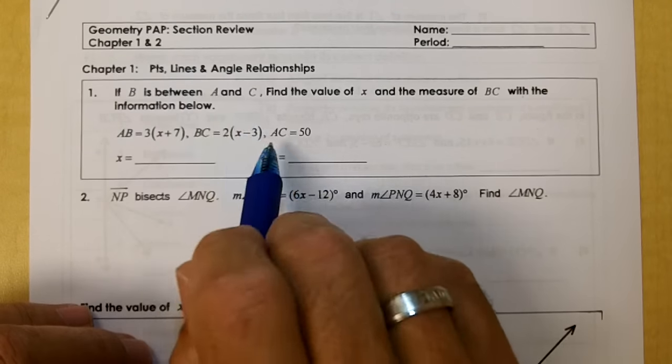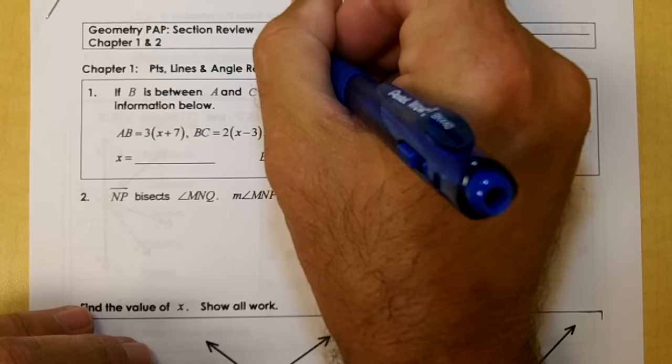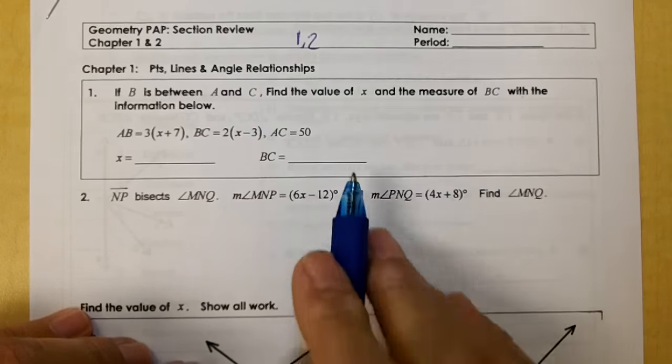Geometry pre-AP chapter 1 and 2 test. This is test 1.2, the second test of the first six weeks.